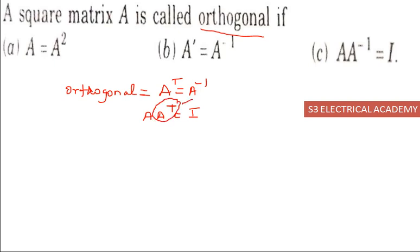A transpose will be replaced by A inverse. So A into A inverse should be equal to I. Therefore, option C is the correct answer.